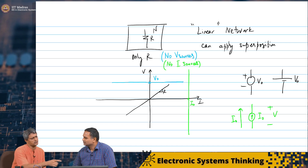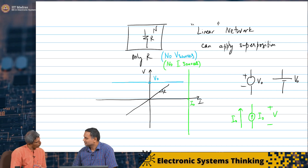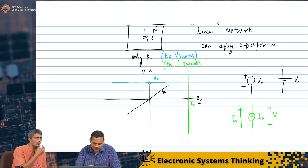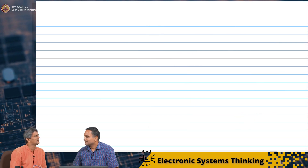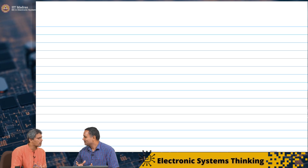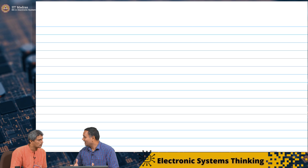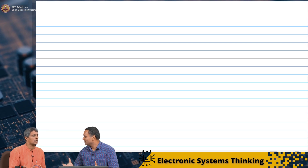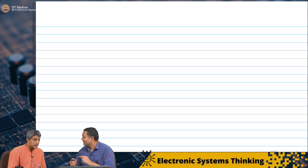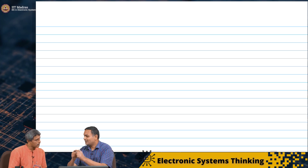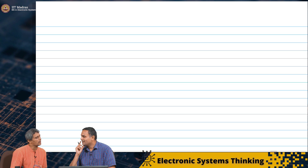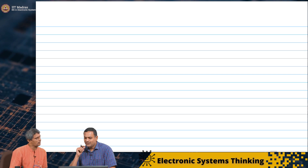There is a question about this 'only R' restriction — might there be other components like capacitors and inductors? A capacitor has a derivative relationship, so it is not straightforward to draw the IV characteristic. These components have memory. You cannot easily draw voltage versus current for a capacitor or inductor. But we can check whether a network containing inductors or capacitors is linear or not.